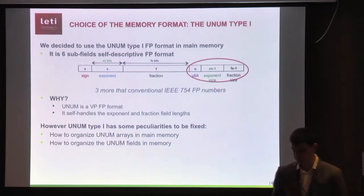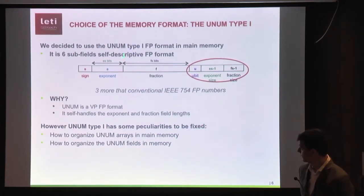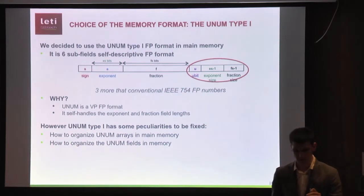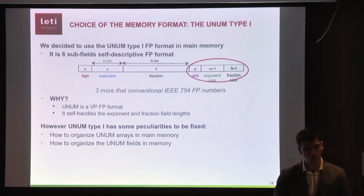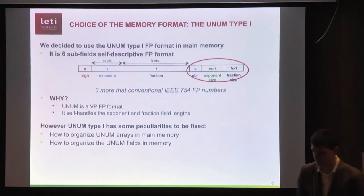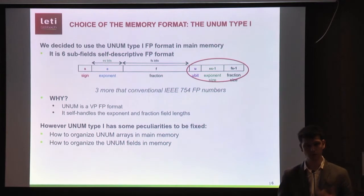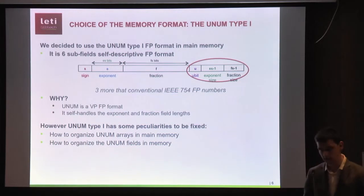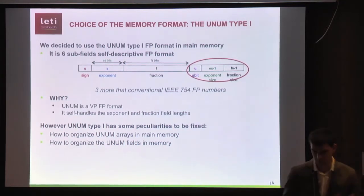Now we move to the choice of the UNUM format. The UNUM type 1 format has six subfields: the three standard ones like IEEE — sign, exponent, and fraction — and then three additional fields which self-encode the number: the exponent size, which tells the size of the exponent; the fraction size; and an additional bit called the U-bit, which supports interval arithmetic inside the number. We chose UNUM type 1 because, to the best of our knowledge, it is the only available variable precision floating-point format in the state of the art, and it self-encodes the exponent and fraction size fields.